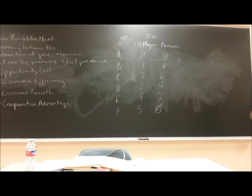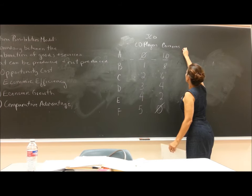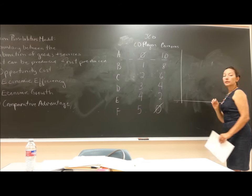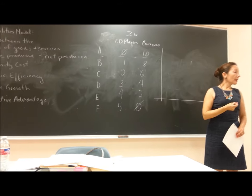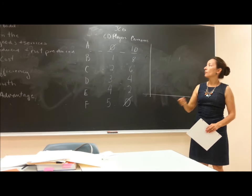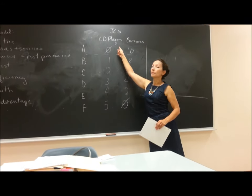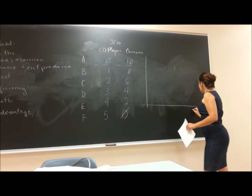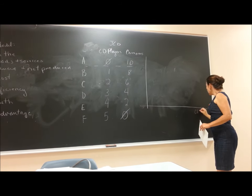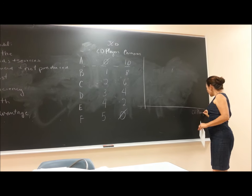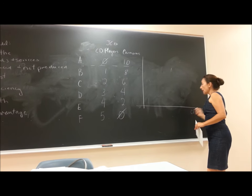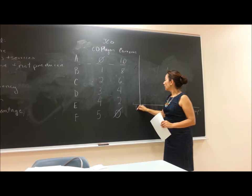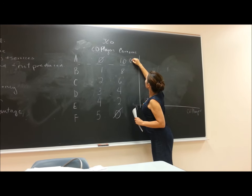When you're mapping out a production possibilities frontier, you're basically using a scatter diagram. I like to put whatever is mentioned first on the x-axis, just for consistency. So CD players go on the x-axis and cameras go on the y-axis.